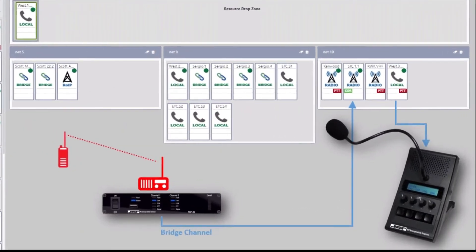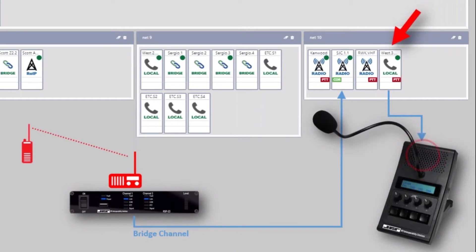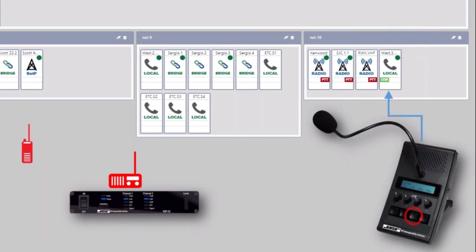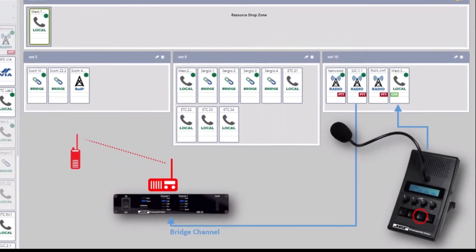In this example, channel 3 of the MCC multi-channel desktop console is located in the net at the right. When one of the resources is in a receive state — meaning a donor radio supported by the RSP Z2 gateway is receiving — all resources within the net will transmit. This is duplex communications occurring. You can see the relationship of the PTT and core indicators in red and green. Because of the presence of the MCC channel, audio will be heard by the dispatch operator manning the MCC console. And because this is duplex communications, the operator of the MCC4 console can key channel 3 and communicate with all parties within the interoperable net.